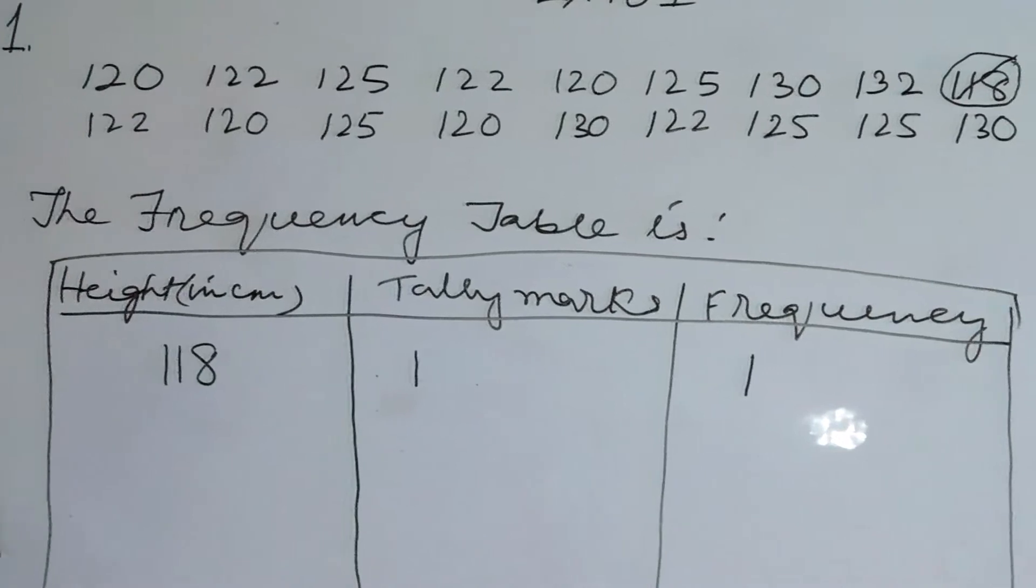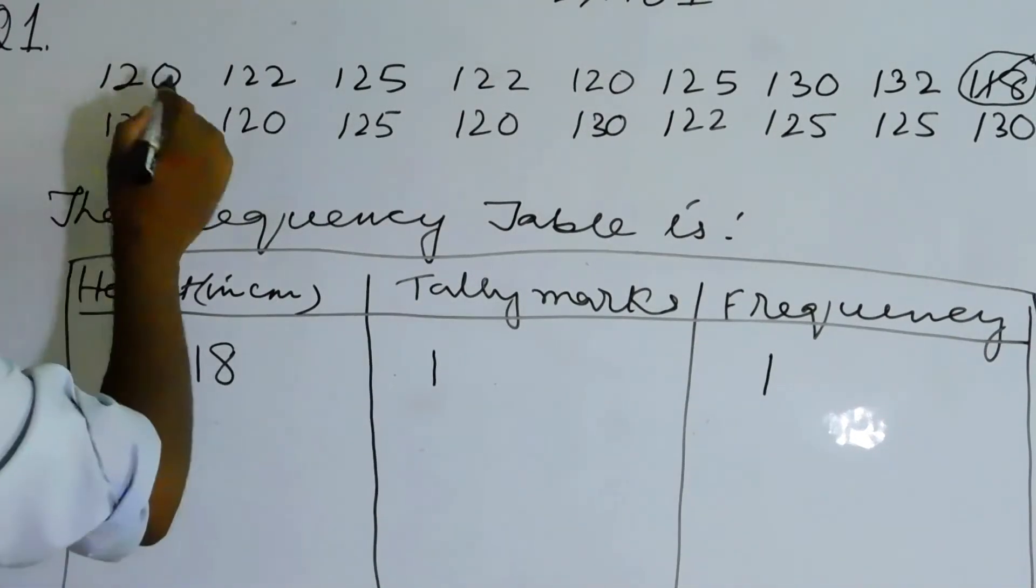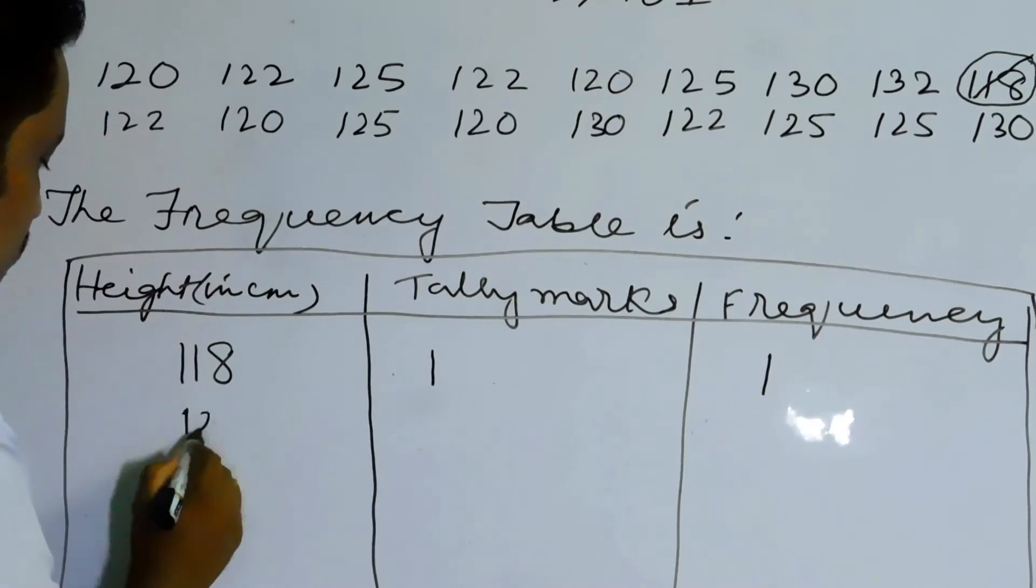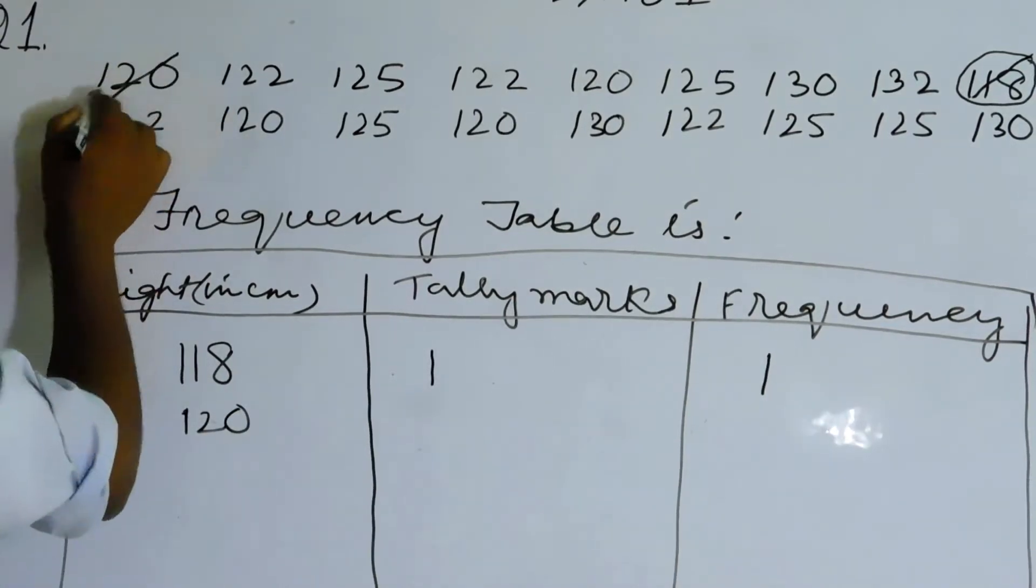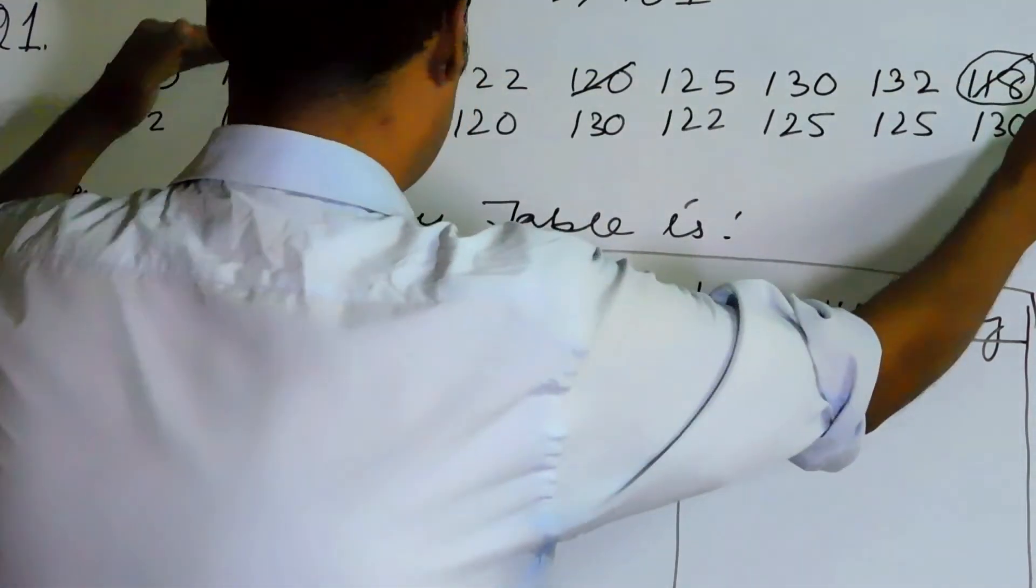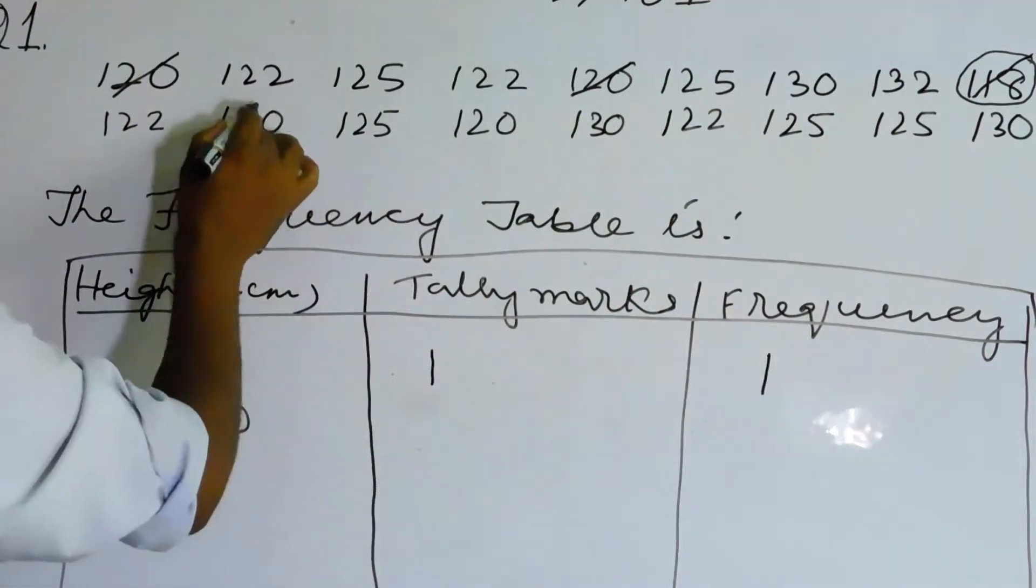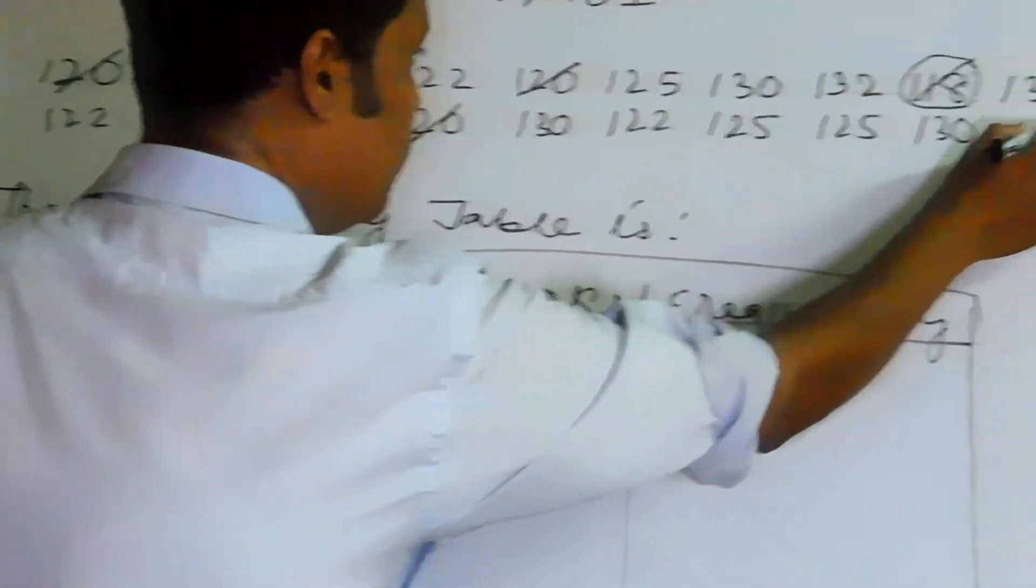Then coming to the next number after 118 I think it is 120, so 120 you write down. Now 120 you have got one two strike it, so first line we have only two.